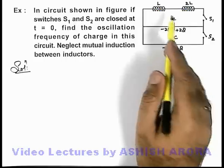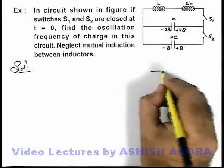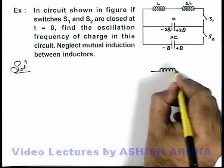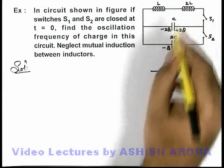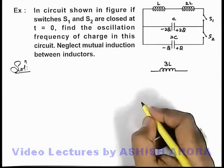We have two inductors in series combination. If we neglect mutual induction, their equivalent inductance is L1 plus L2. So the equivalent inductance for this system will be 3L.